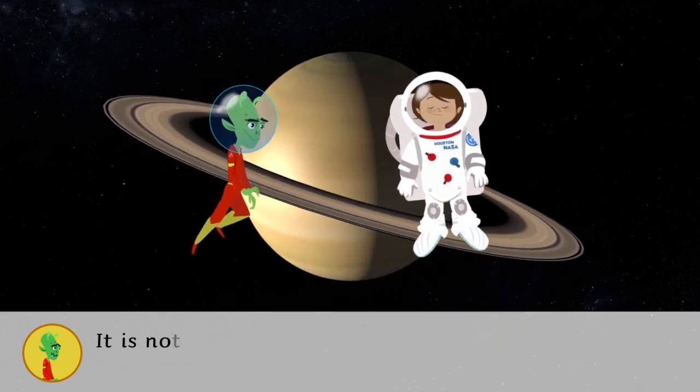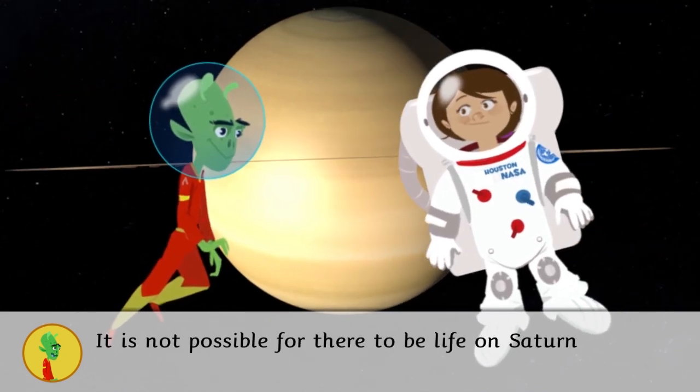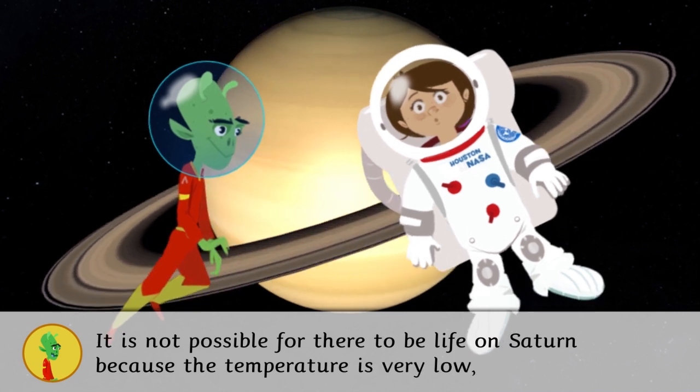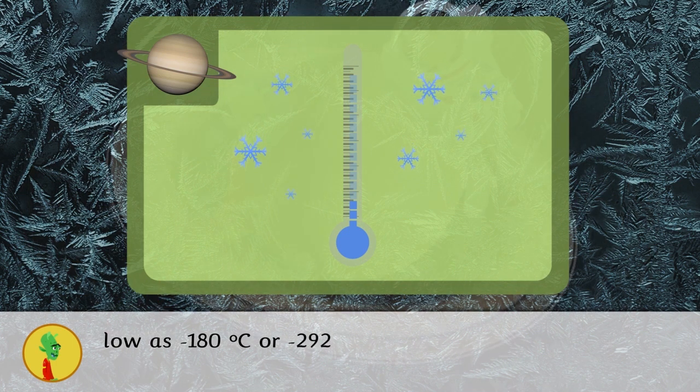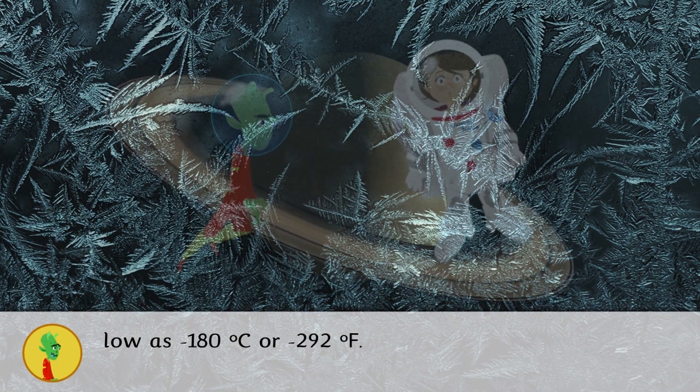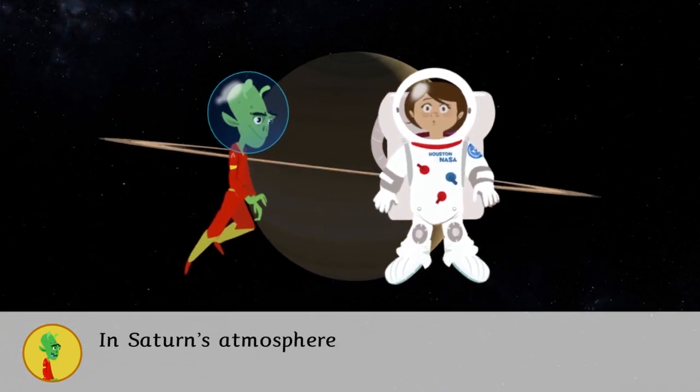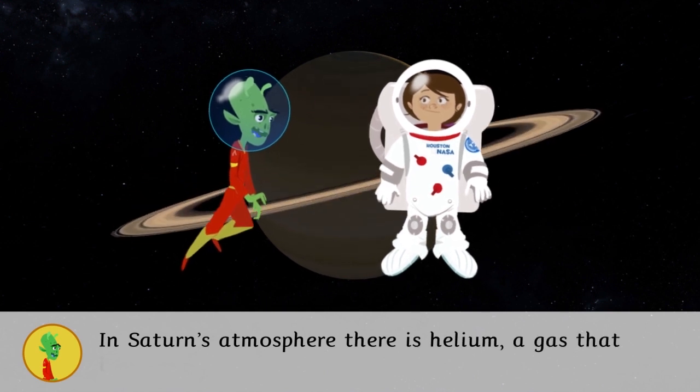It is not possible for there to be life on Saturn because the temperature is very low. It can get as low as minus 180 degrees Celsius or minus 292 Fahrenheit. In Saturn's atmosphere there is helium, a gas that is used for x-rays and spaceships.